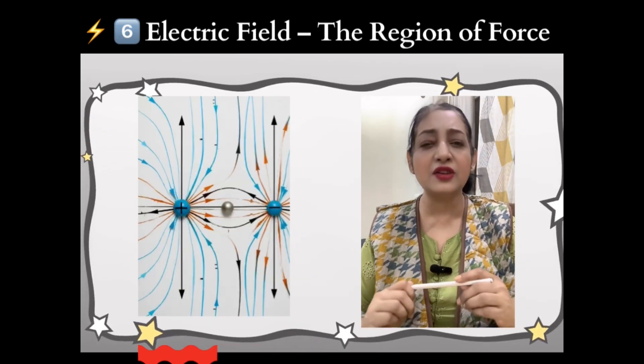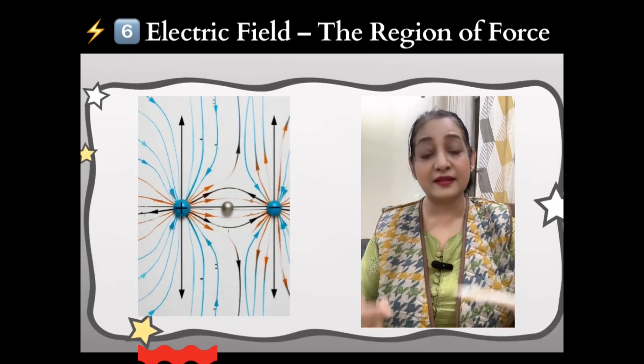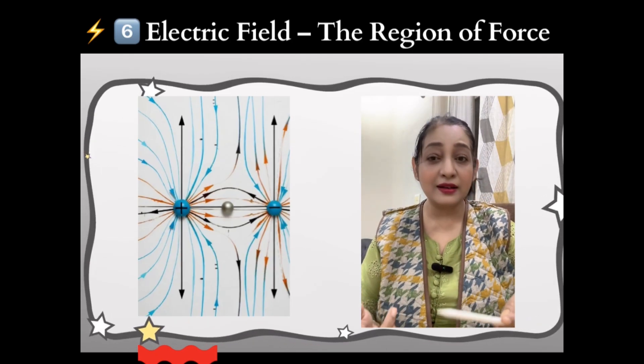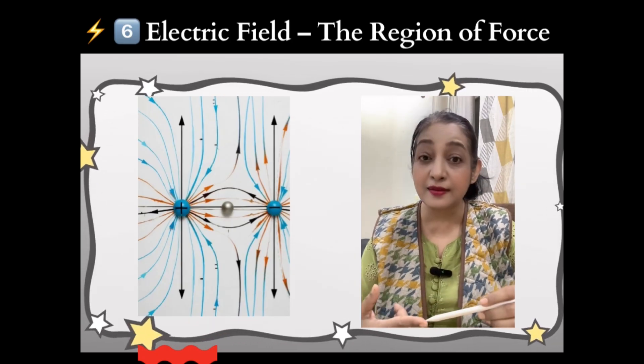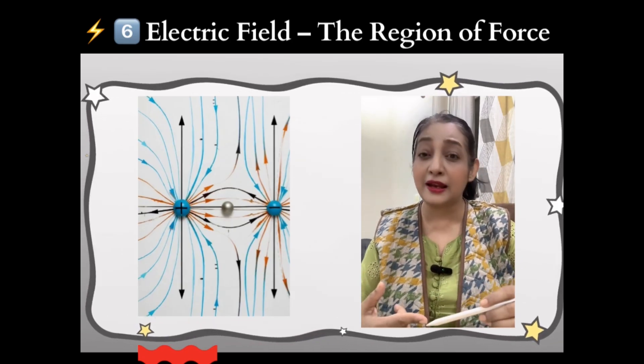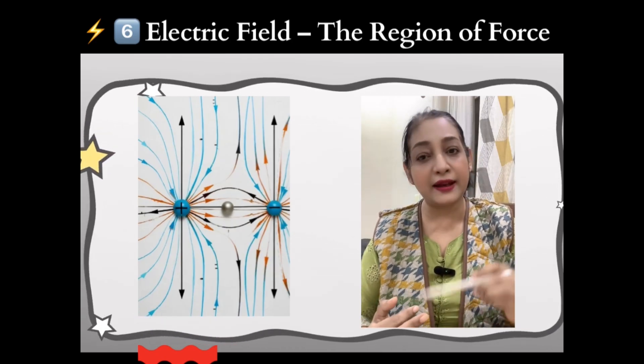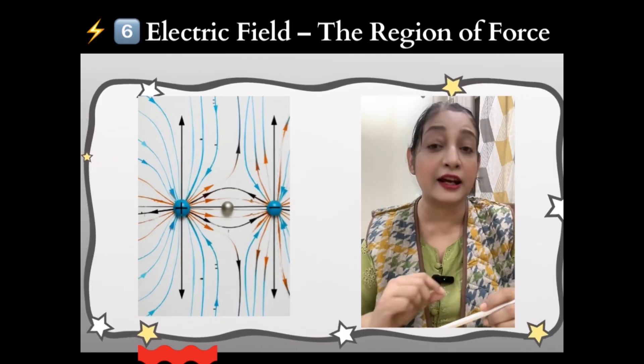Key points: number one, it is invisible but can be represented by electric field lines. Number two, field lines show direction and strength of the electric force.